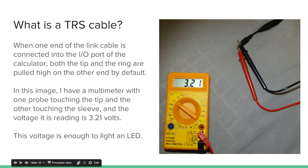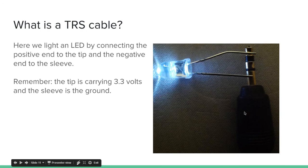This voltage is enough to light an LED. Here we have an LED lit by connecting the positive end to the tip and the negative end to the sleeve. I've got the positive end connected to the tip and the negative end to the sleeve, and the tip is carrying 3.3 volts and the sleeve is the ground.